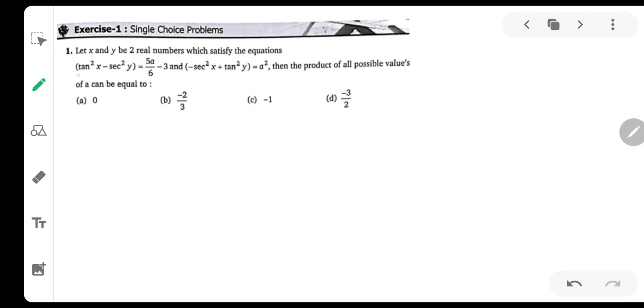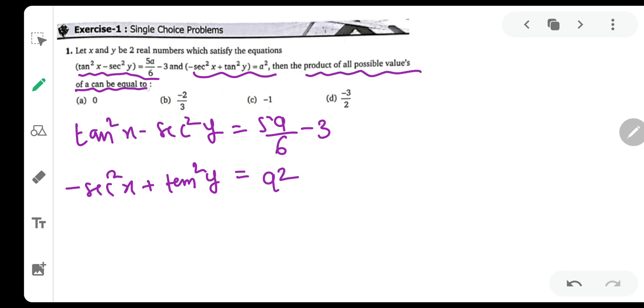Okay, the question says that tan square x minus sec square y equals 5a by 6 minus 3, and minus sec square x plus tan square y equals a square, and they have asked us the product of all possible values of a that can be.